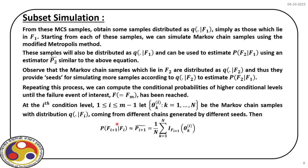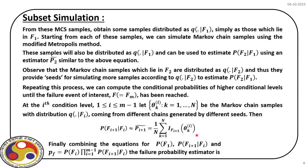The conditional failure probability is given by the expression for the (i+1)-th chain given the i-th chain has already occurred. We apply the same Monte Carlo expression to simulate the event Fᵢ₊₁. Finally, combining all subsets gives the total probability of failure as the product of all subset conditional probabilities.